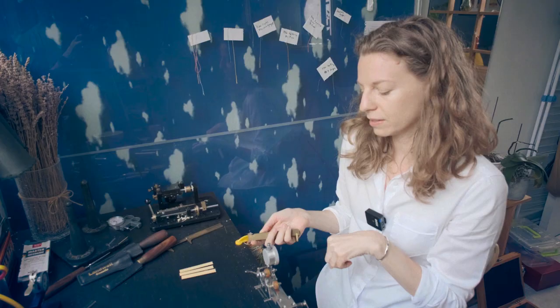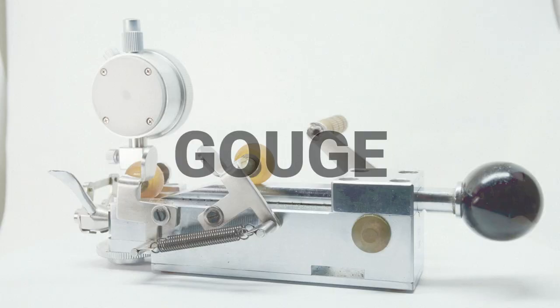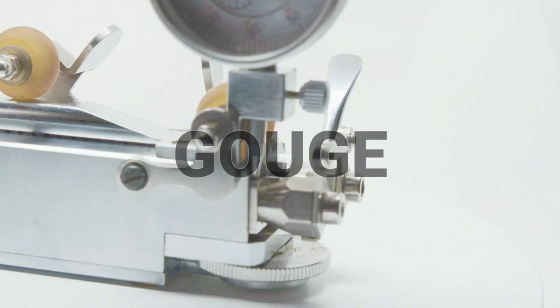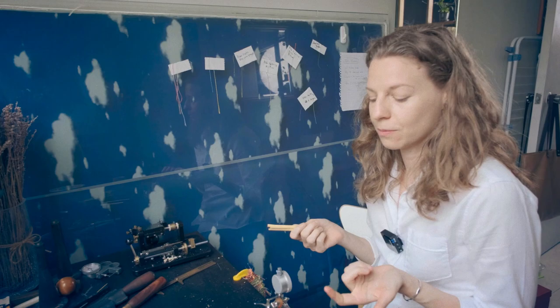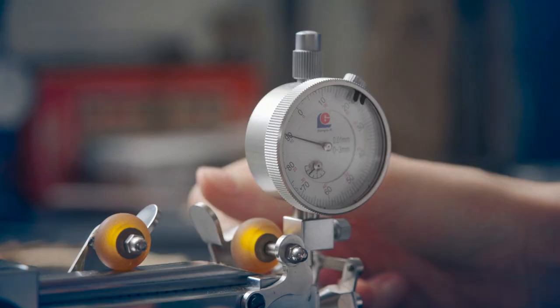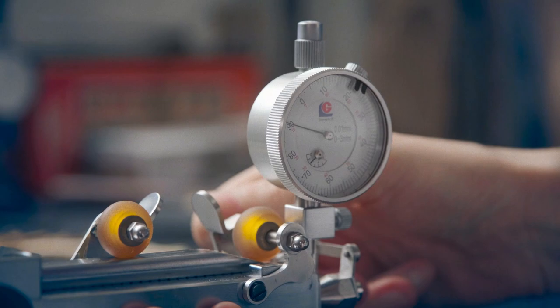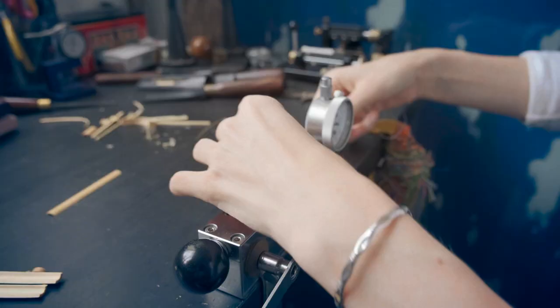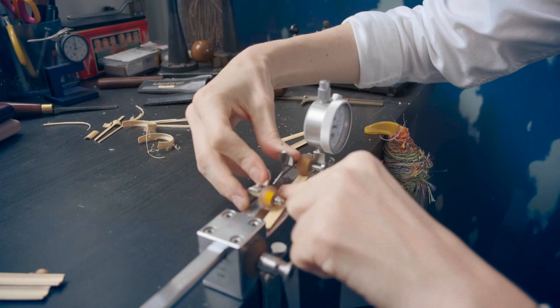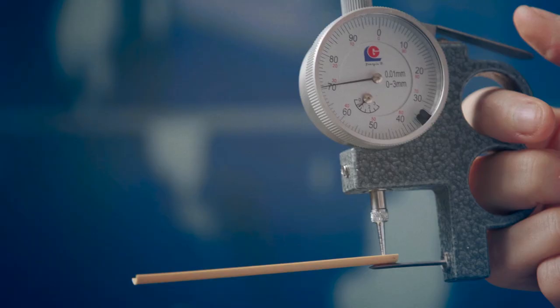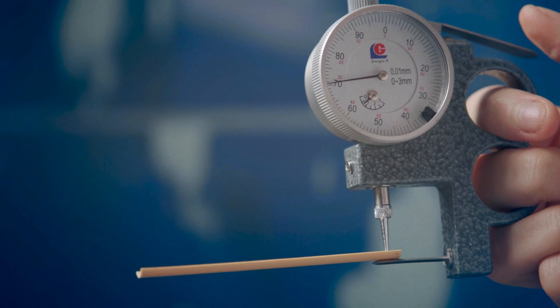And now we can move to the gouge. A lot of the sounds you get from oboe reeds comes from the gouge. So I usually do like a very generous gouge. Let's say like 90. Slowly shaving off pieces of cane. I actually do this process a couple times. Now we have to get a little bit more precise here. 70. So we're doing well.